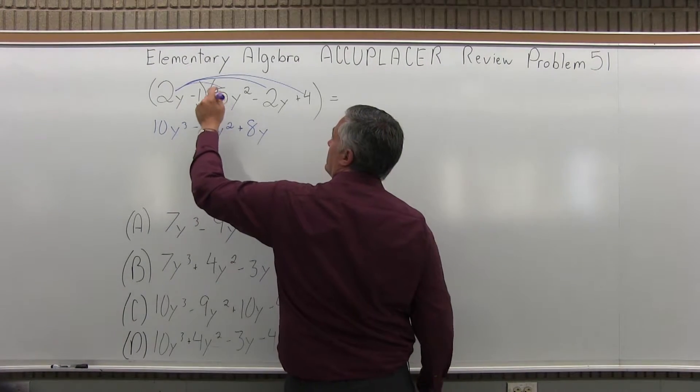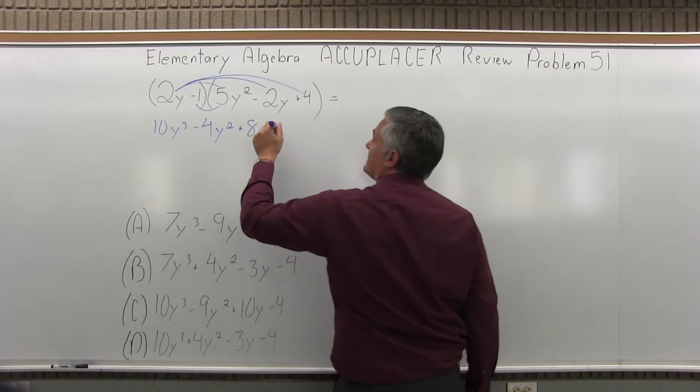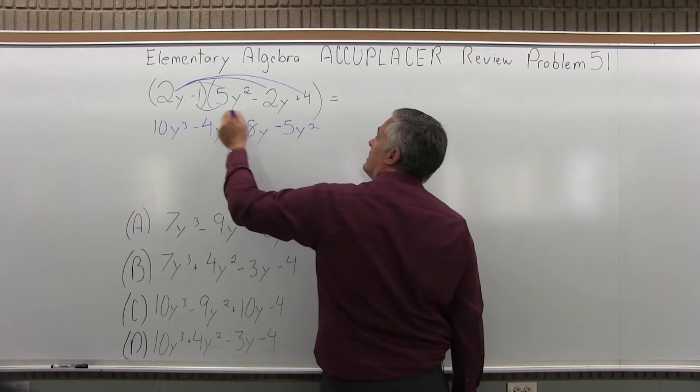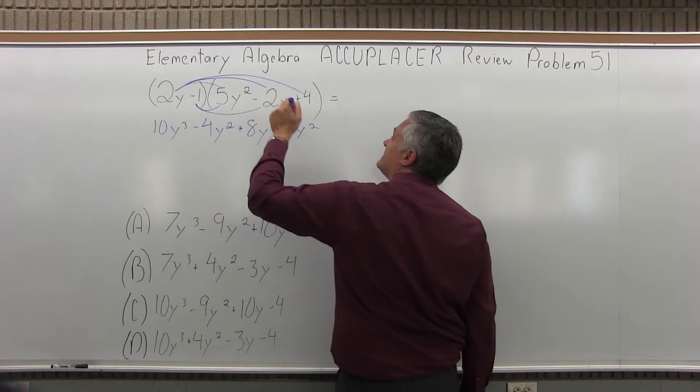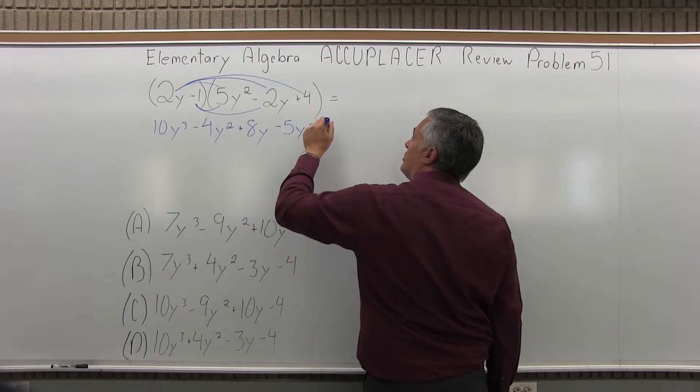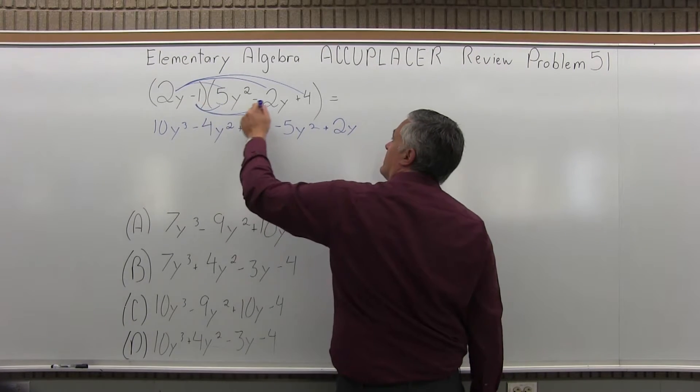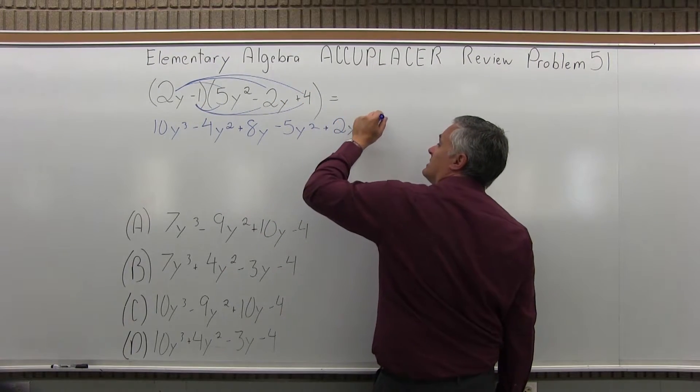Negative 1 times 5y squared is negative 5y squared. Then negative 1 times negative 2y will be plus 2y. And finally negative 1 times 4 is minus 4.